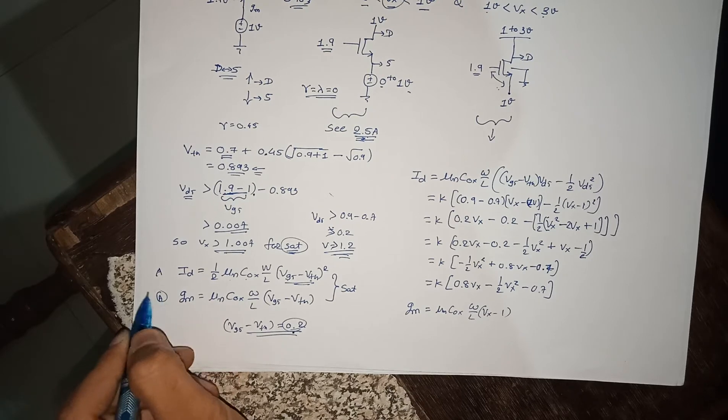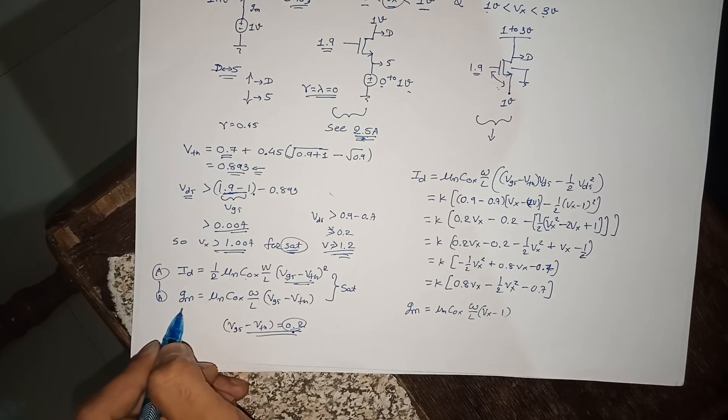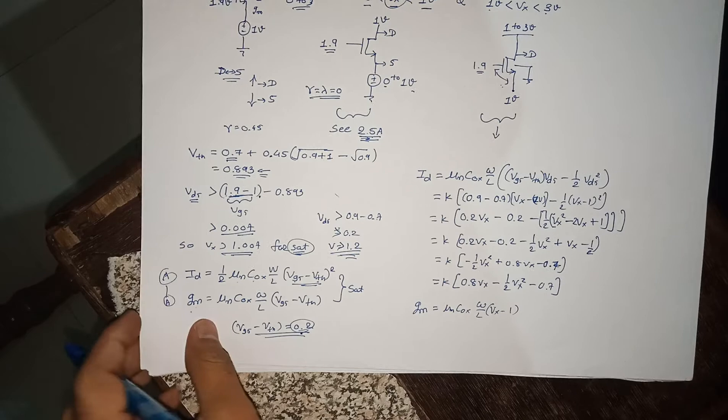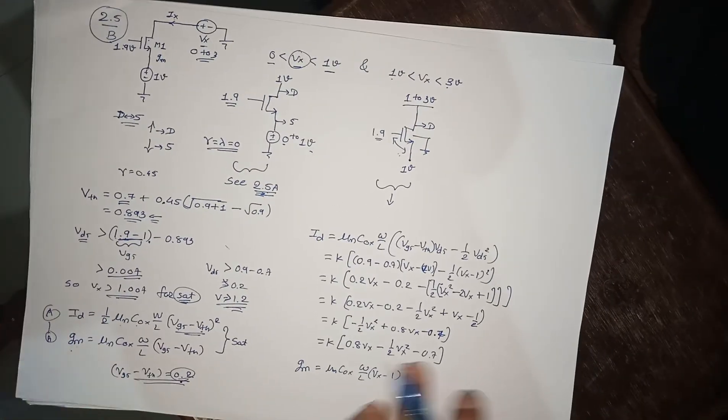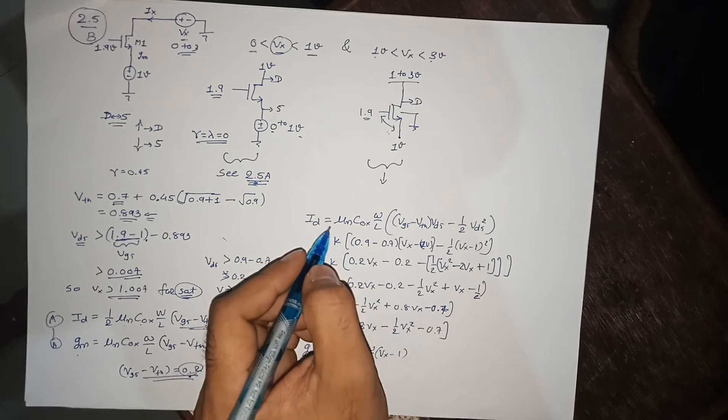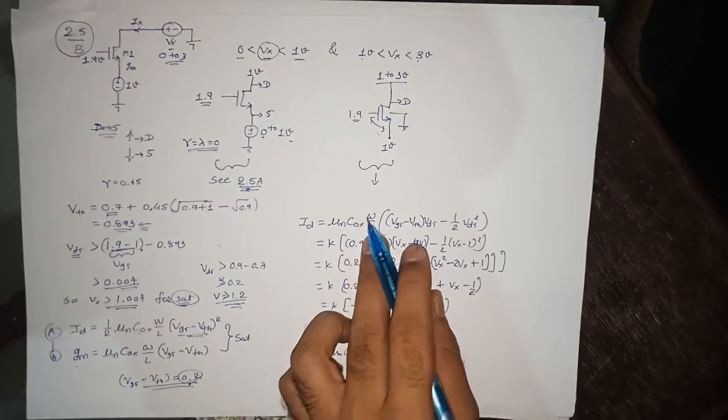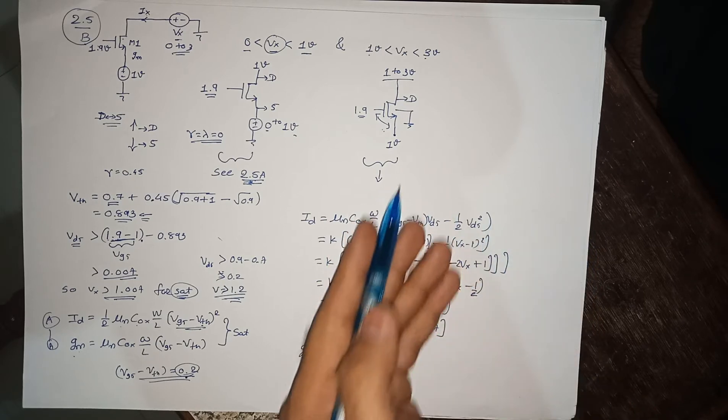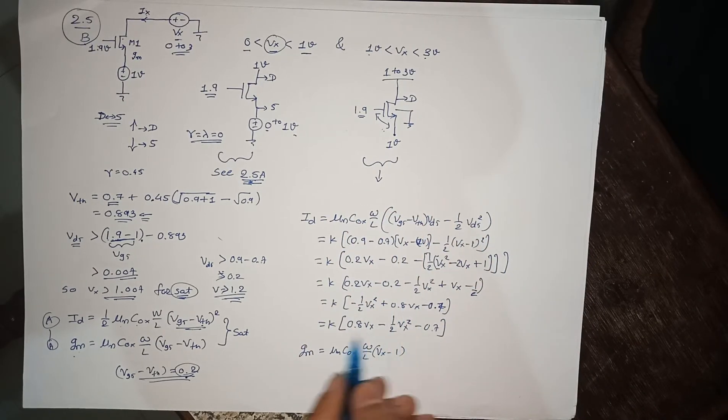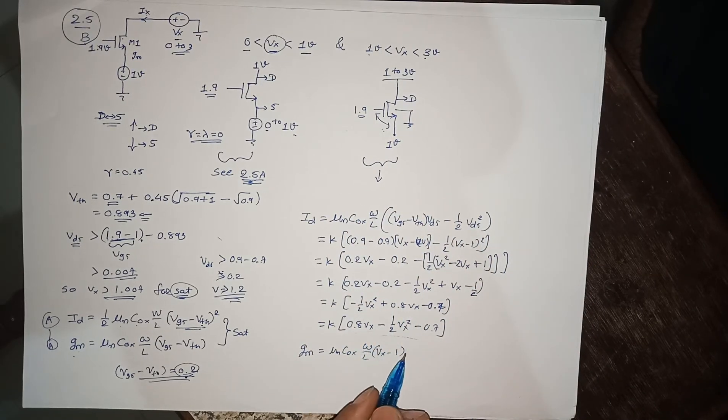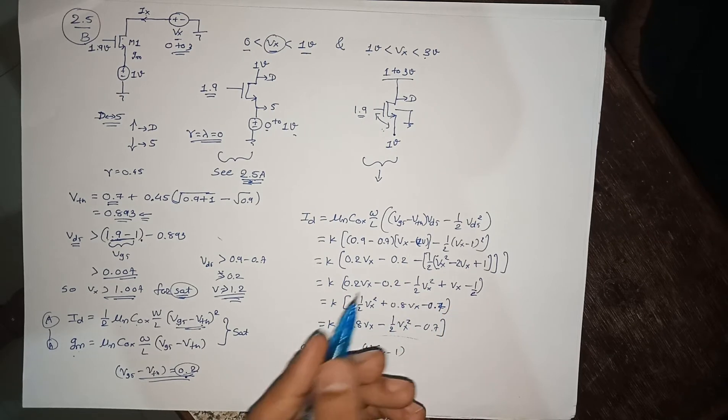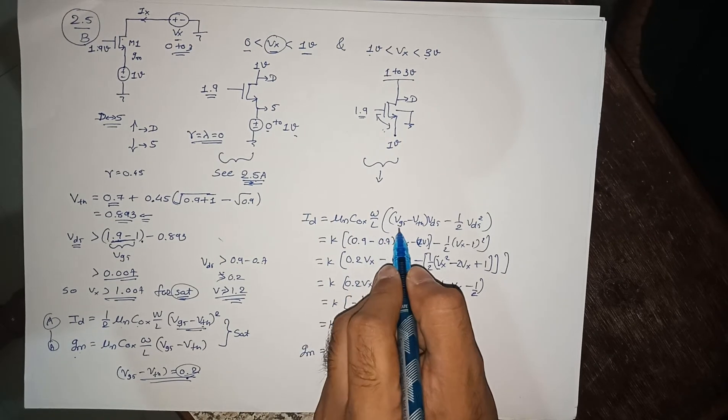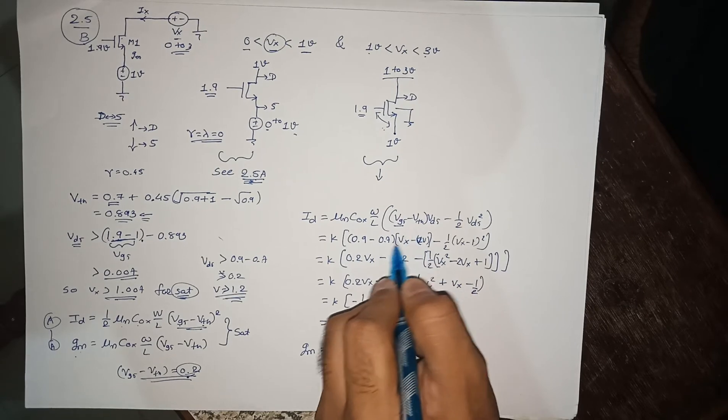This is the equation for ID or IX and gm. For triode region or linear region, your equation of current will be μn Cox W over L times VGS minus Vth times VDS minus one half VDS squared. If you will simplify this equation, you will come up with the simplified version. You can just put VGS, that is 0.9 minus Vth.